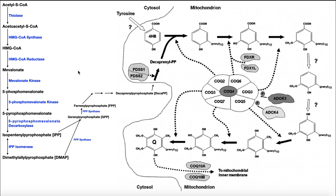Cholesterol, and therefore vitamin D, and also coenzyme Q are ultimately derived from the same pathway. They diverge at the metabolite farnesyl pyrophosphate, and the committed step for all of them is HMG-CoA reductase. We'll come back to this for a clinical application at the end of the video.